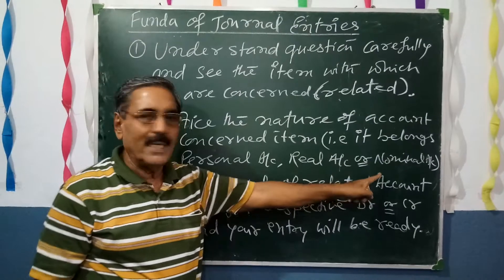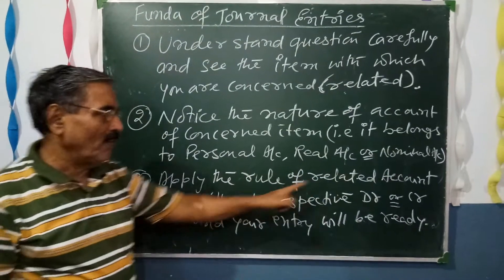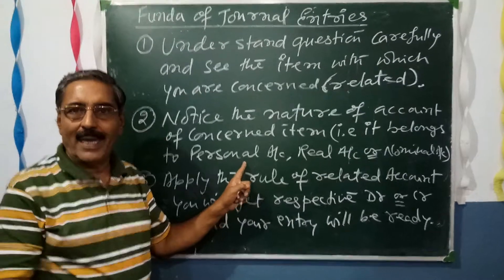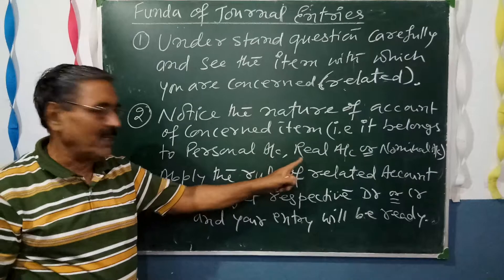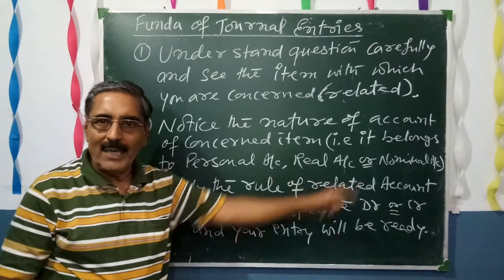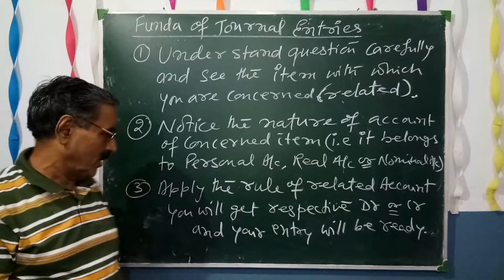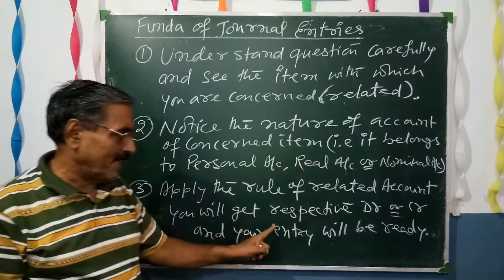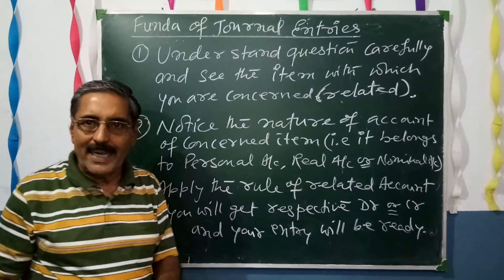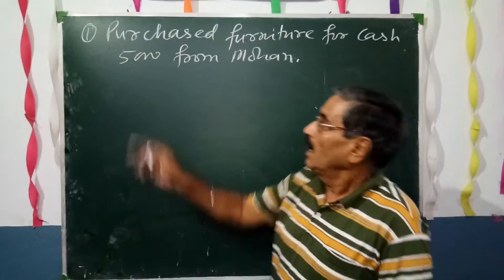Thirdly, apply the rule of the related account. If it is personal, debit the receiver and credit the giver. If it is real, debit what comes in and credit what goes out. If it is nominal, debit all losses and expenses and credit all profits and gains. You will get a respective debit or credit, and your entry will be ready.